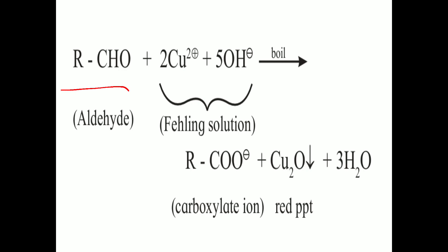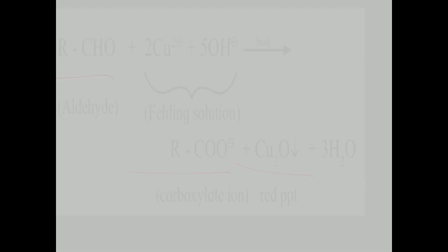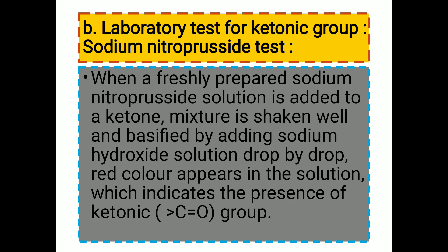In the Fehling's test reaction, the aldehyde reacts with 2Cu²⁺ and 5OH⁻ in a water bath, converting the aldehyde to a carboxylic acid and producing cuprous oxide (Cu₂O) as a red precipitate. To summarize, the three tests for aldehydes are the Schiff's test, Tollens test, and Fehling's test.